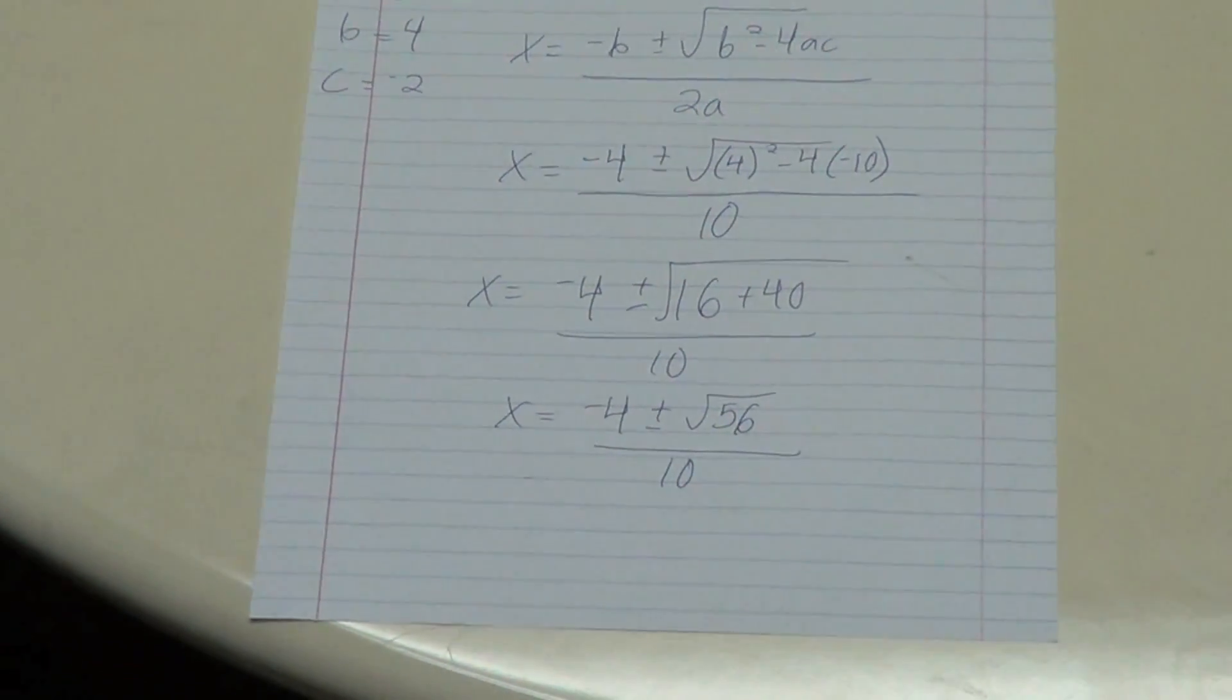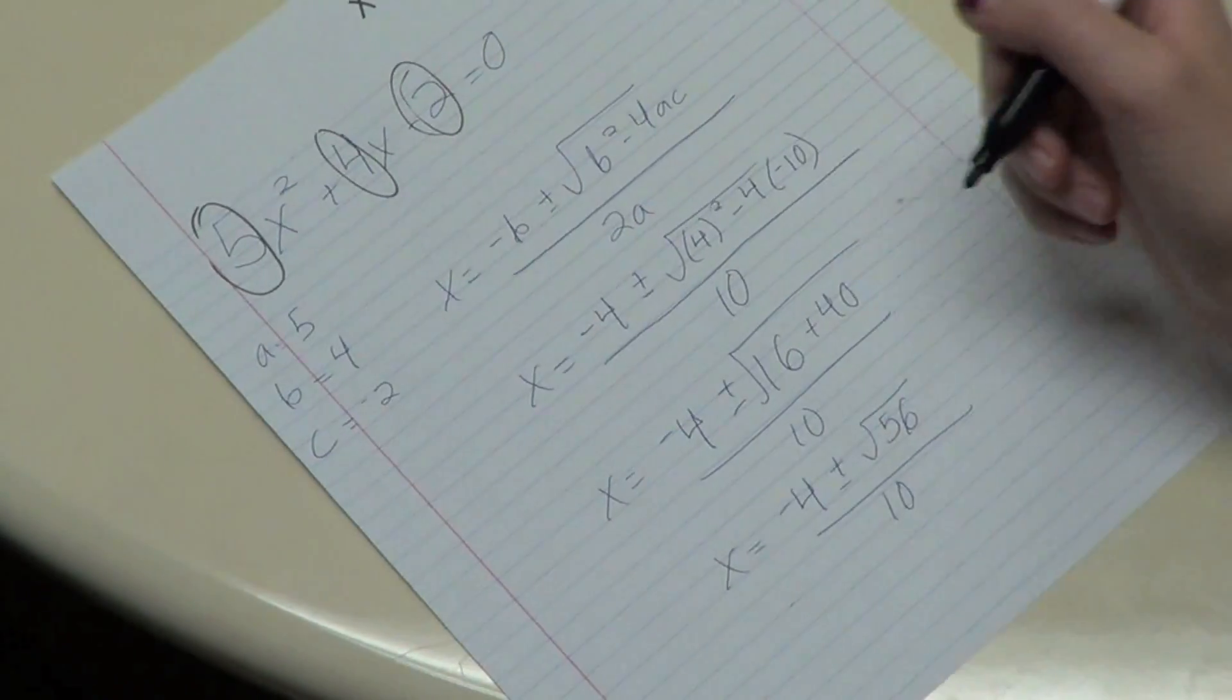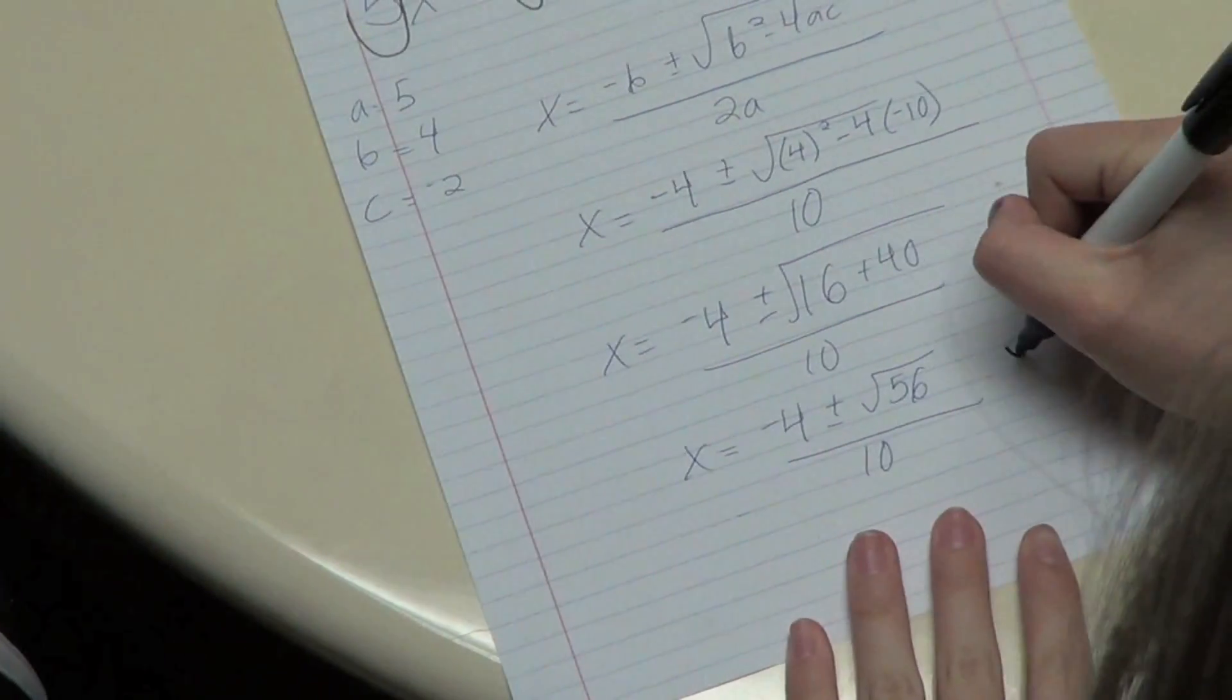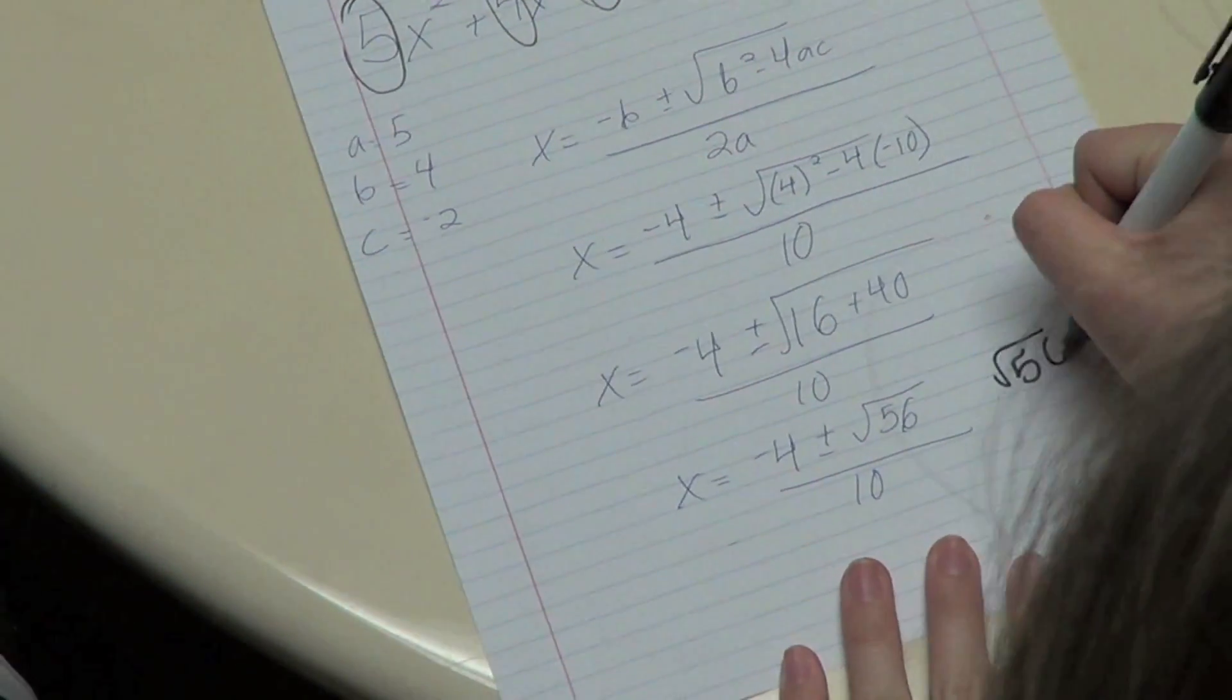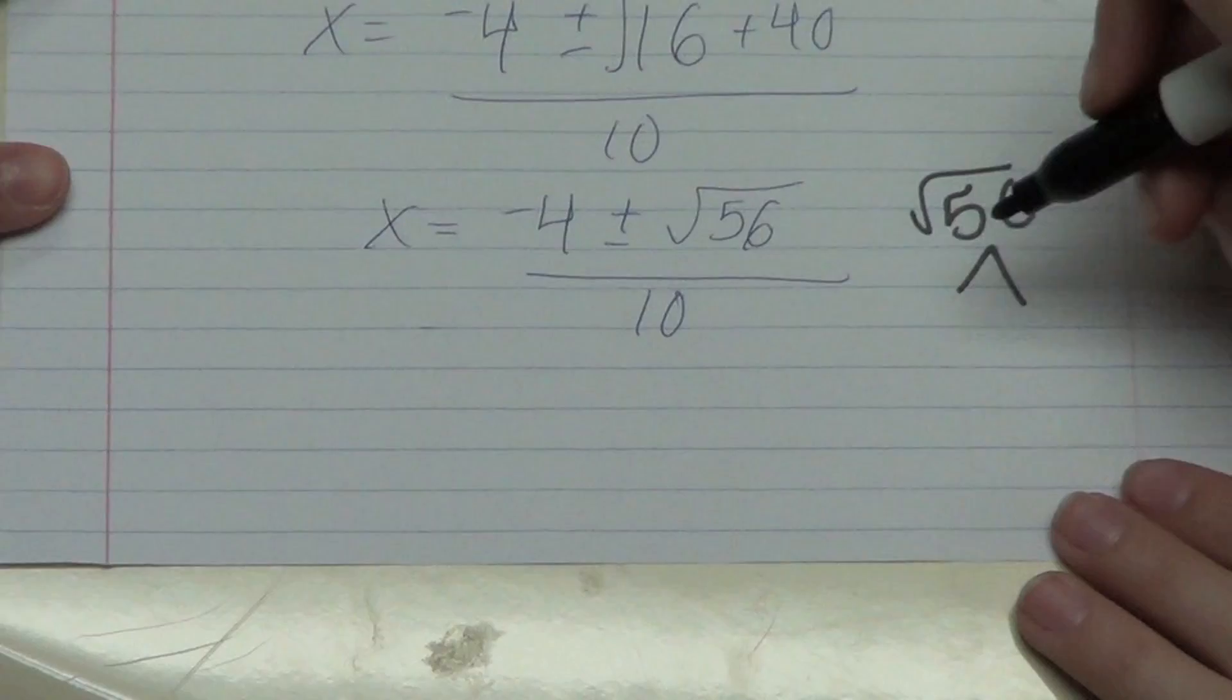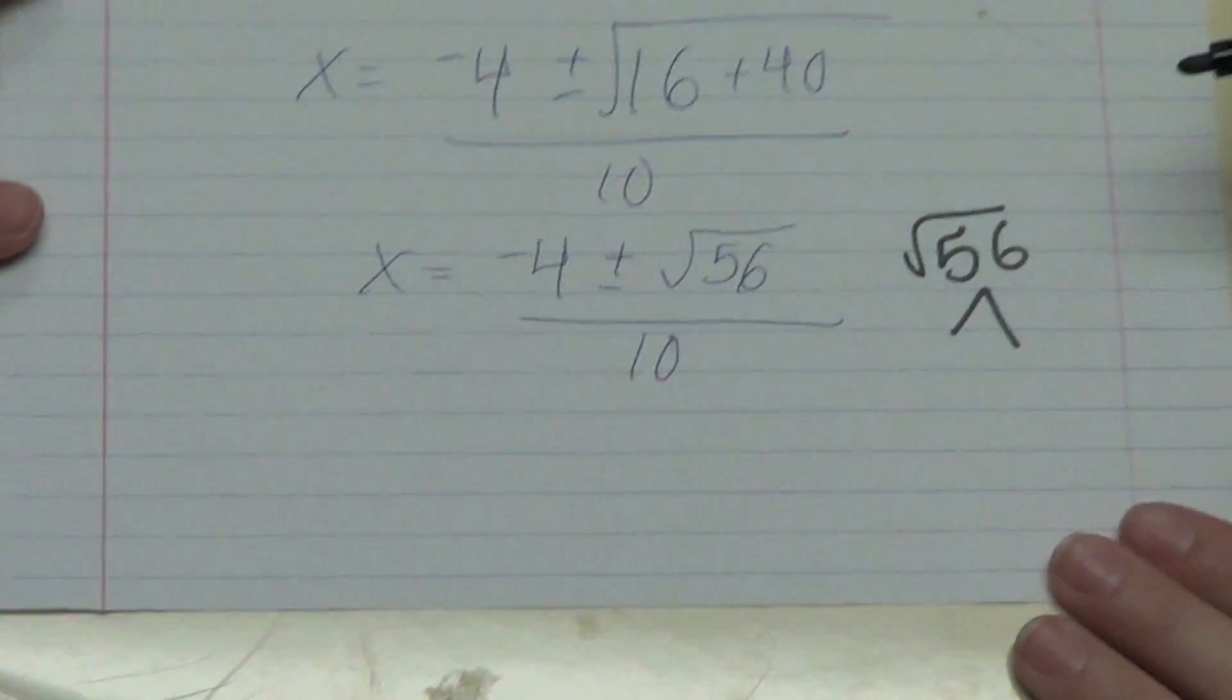Now you're going to have to simplify the radical. To simplify rad 56, you just take it, you're going to break it up. Alright, so you have rad 56. Now what?